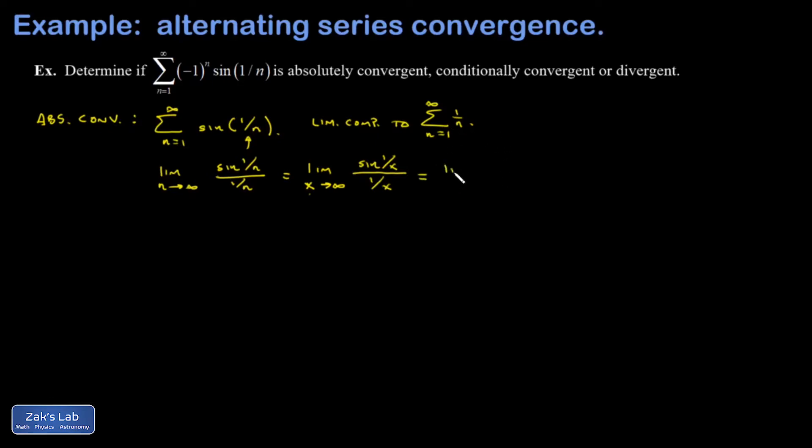And when I differentiate the numerator, I get cosine 1 over x. And then I have to multiply by the derivative of 1 over x, which is negative 1 over x squared. And then I see that same expression, negative 1 over x squared, in the denominator.